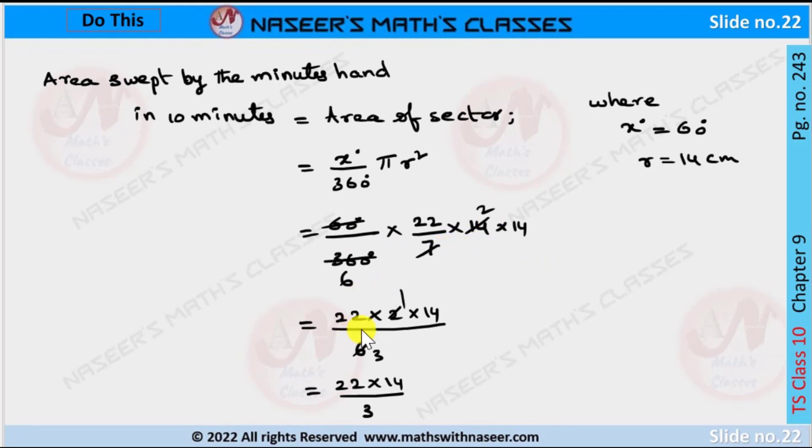The remaining values can be written as 22 into 2 into 14 by 6. Now we cancel 2 into 6, then we get 22 into 14 by 3.